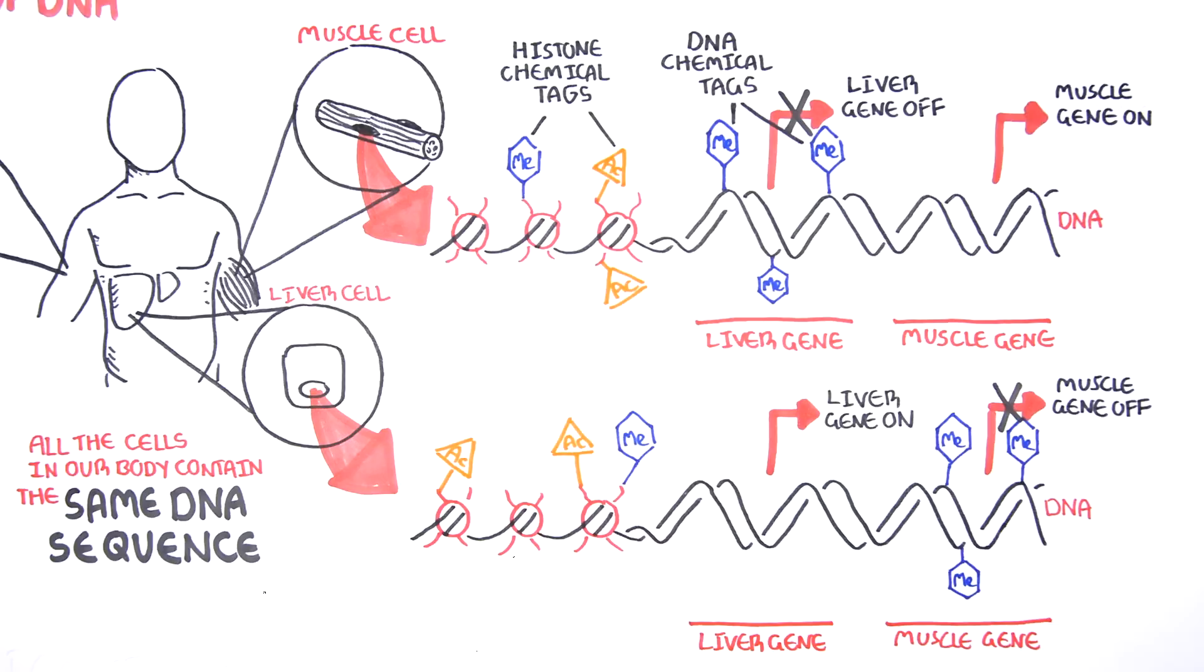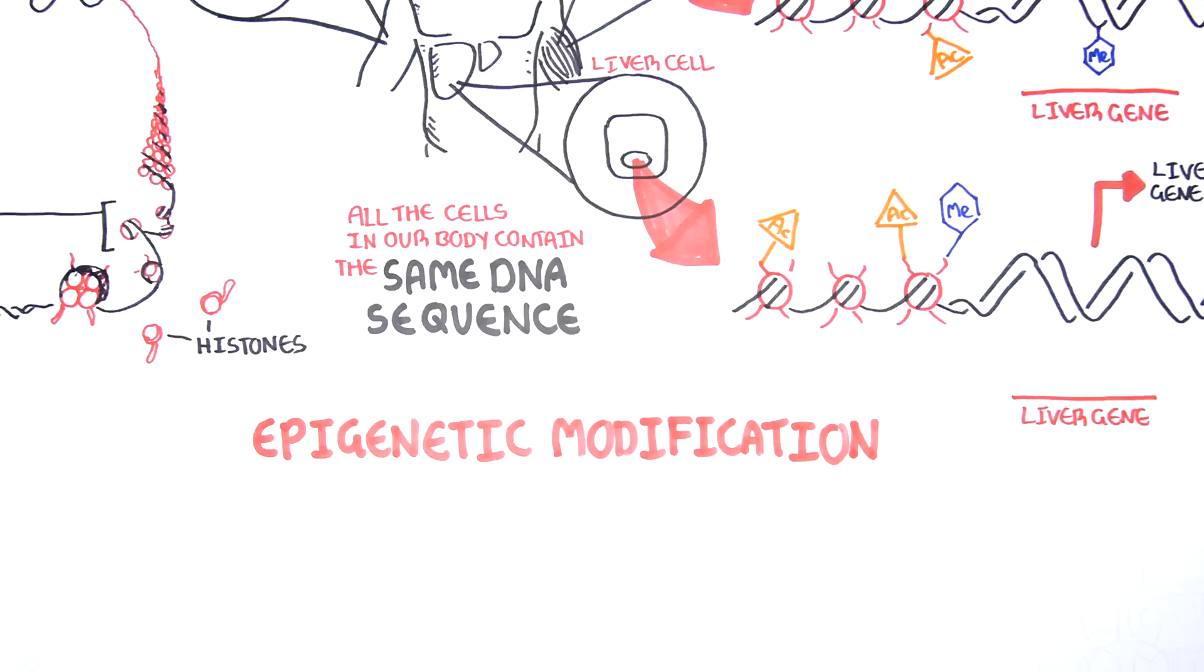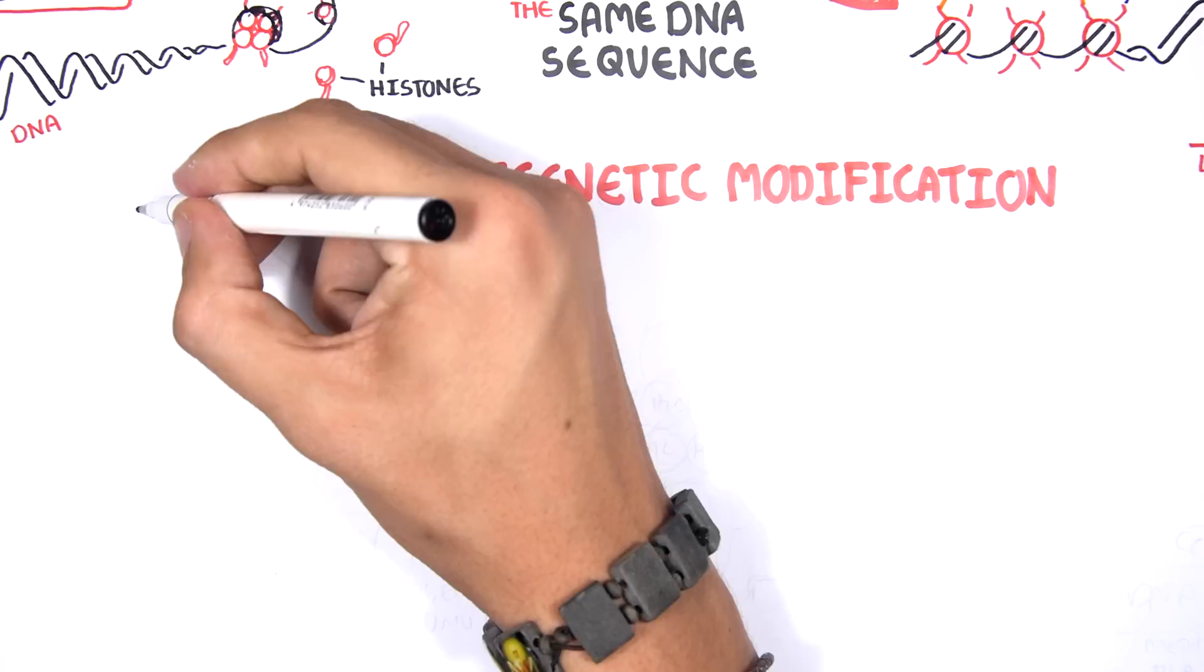These modifications are known as epigenetic modifications. Epi is Greek for above, above the genes, so modifications above the genes or on the genes. Epigenetic modification brings about lasting changes in gene expression.